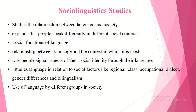Sociolinguistics studies the relationship between language and society. It explains that people speak differently in different social contexts and highlights the social function of language. It covers the relationship between language and the context in which it is used, and studies how people signal aspects of their social identity through their language — including religion, regional class, occupation, dialect, gender differences, bilingualism, and language use by different social groups.